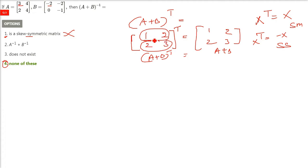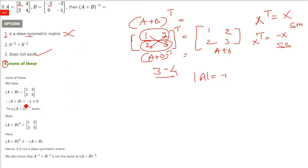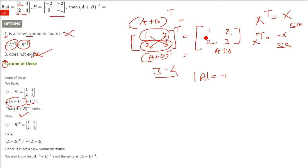A inverse plus B inverse — you just find that out. The determinant of A is 3 minus 4, so determinant of A equals minus 1, meaning A plus B inverse does exist. So the first and third options I showed you; the second I hope you can do yourself. But the answer is the fourth option, which is none of these, because all the other options are incorrect.